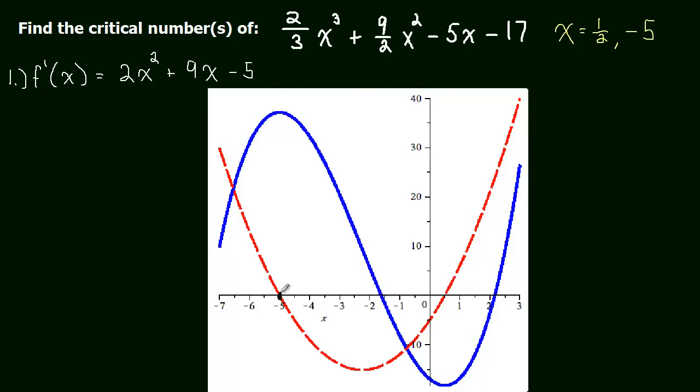Now let's look at the critical numbers. We already know the derivative is going to be 0 at negative 5 and 1 half. Now, when we look at our function, we should be able to see that the function, the slopes, are definitely going to be positive to the left of negative 5. The derivative is positive to the left of negative 5, so the slope should be.